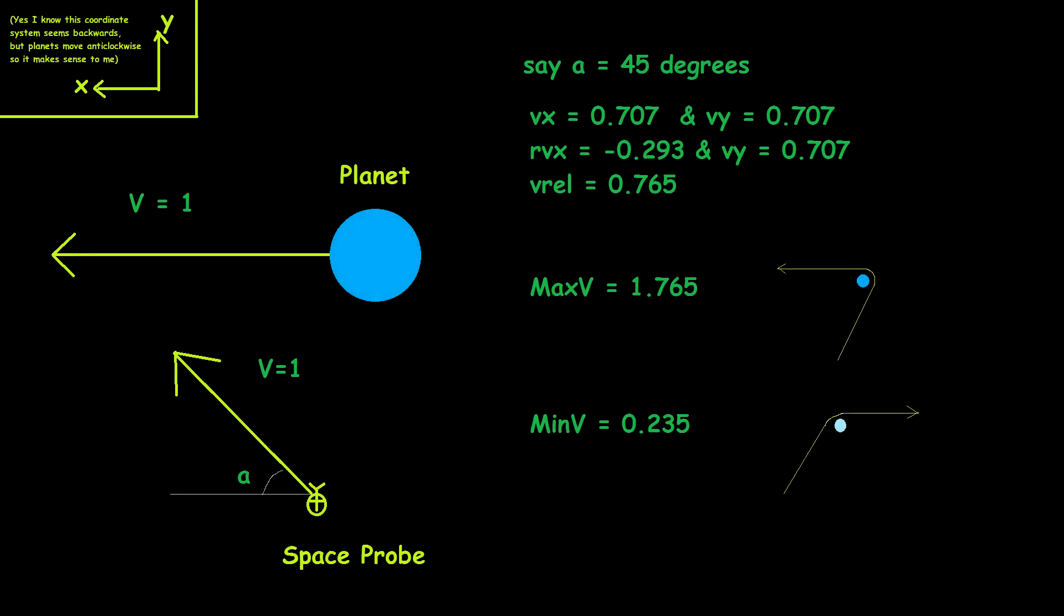So I gave up trying to make it clear in Kerbal Space Program and decided to use the magic of Microsoft Paint. So yeah, this is a very simple diagram. Now, many of you will immediately get confused because the coordinate system is backwards. And that's because if you look down on the planetary system of the Earth or Kerbin from the North Pole, then the planets move anticlockwise. So if we imagine a space probe moving outwards past a planet, a space probe which has a certain velocity, in this case I gave both objects a velocity of 1. And I said that it's moving an angle of alpha relative to the planet, you can figure out the x and y components of the orbit.